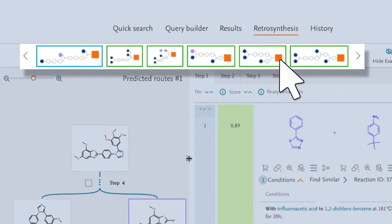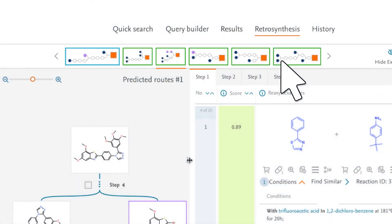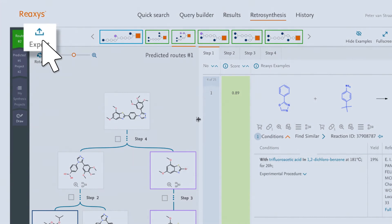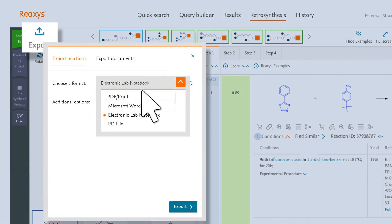ReAxis offers diverse route suggestions. Chemists can use these insights and apply their own experience to assess which routes are most viable. Routes can be exported in multiple formats for sharing and adding to electronic lab notebooks.